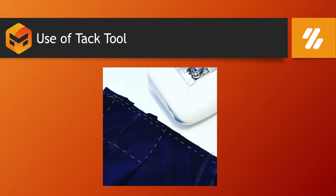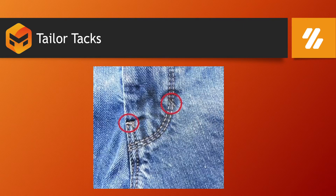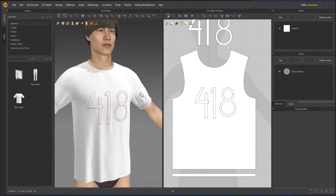In real-life fashion design, to tack is to sew quick temporary stitches that will later be removed. Tacking is used for a variety of reasons such as holding a seam in place until it is sewn properly, or transferring pattern markings onto garments. Tailor tacks are basically loose looped stitches cut on the fabric as an indication of where to stitch.